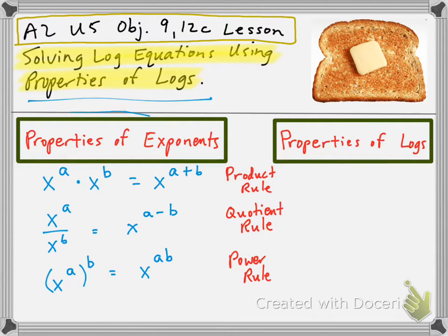As you can see on the left-hand side here, we've got the properties of exponents. We know that we have a product rule, meaning when you multiply, the two bases are the same. So we have this first base, x to the a times x to the b. As long as those bases are the same, then we just get x to the a plus b.